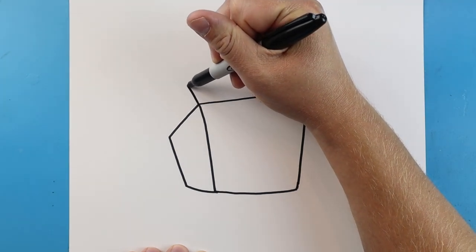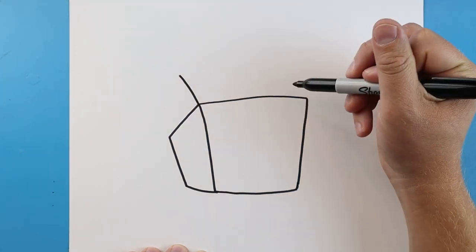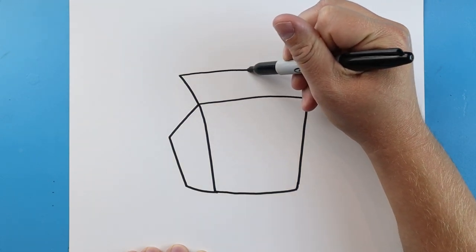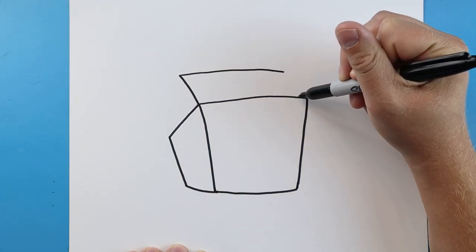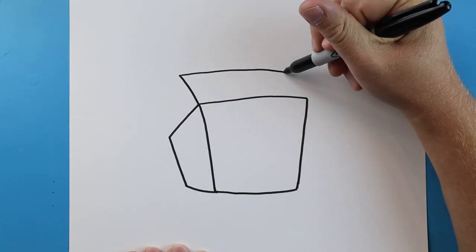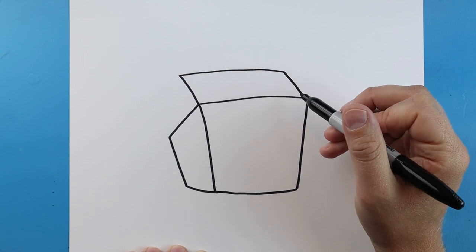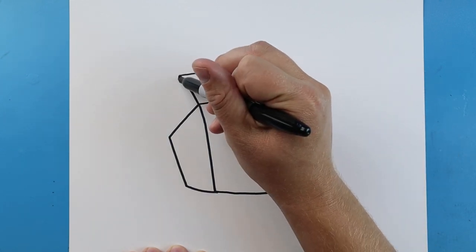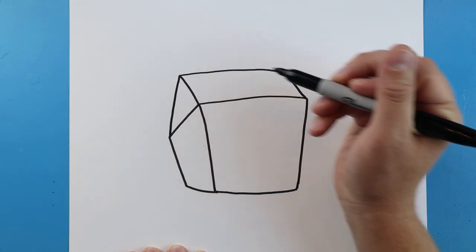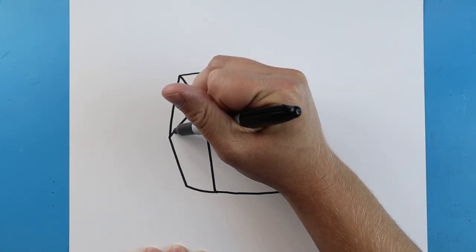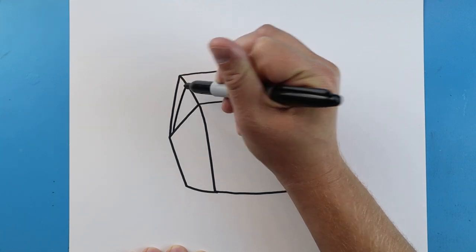Starting up here, draw a line that goes up at an angle. Come over and stop a little bit sooner than here, then connect it. Starting here, draw a line down, then make another line that comes up here.